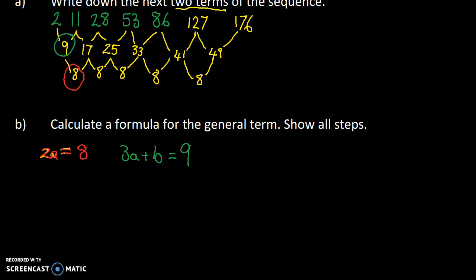Then 3a plus b will equal 9. And lastly, let's go to purple. a plus b plus c will have a value of 2. So you just need to memorize that it's going to be 2a, 3a plus b and a plus b plus c and then figure out that 2a will be equal to that bottom one. 3a plus b will be equal to that middle and a plus b plus c is equals to 2.